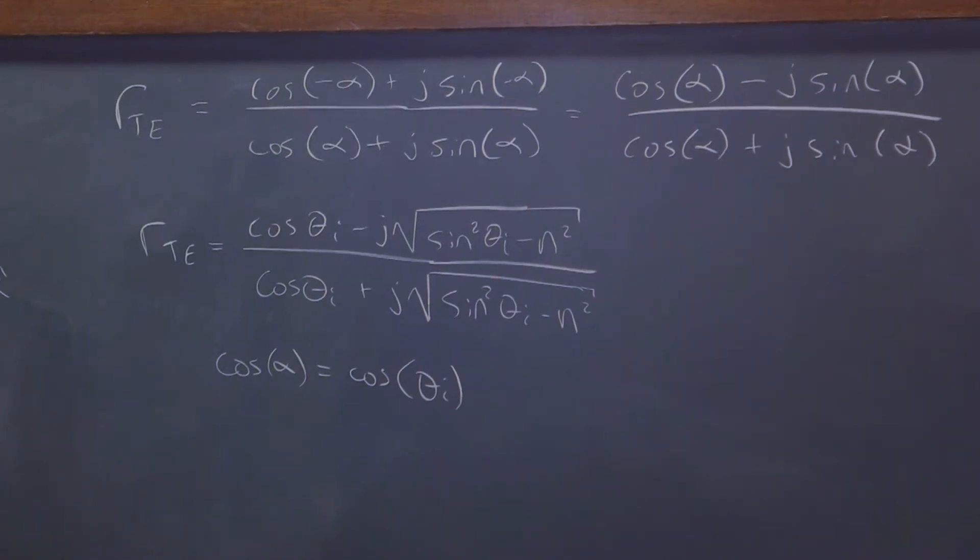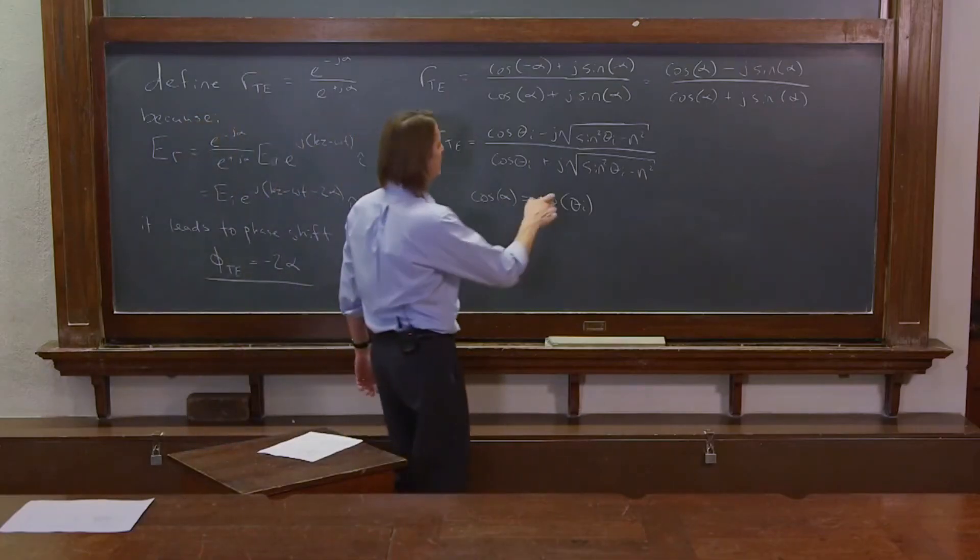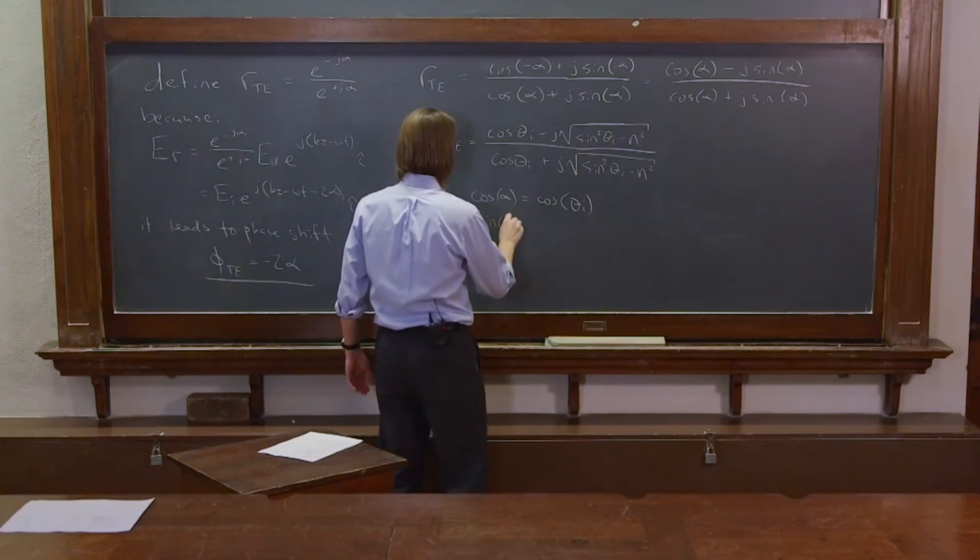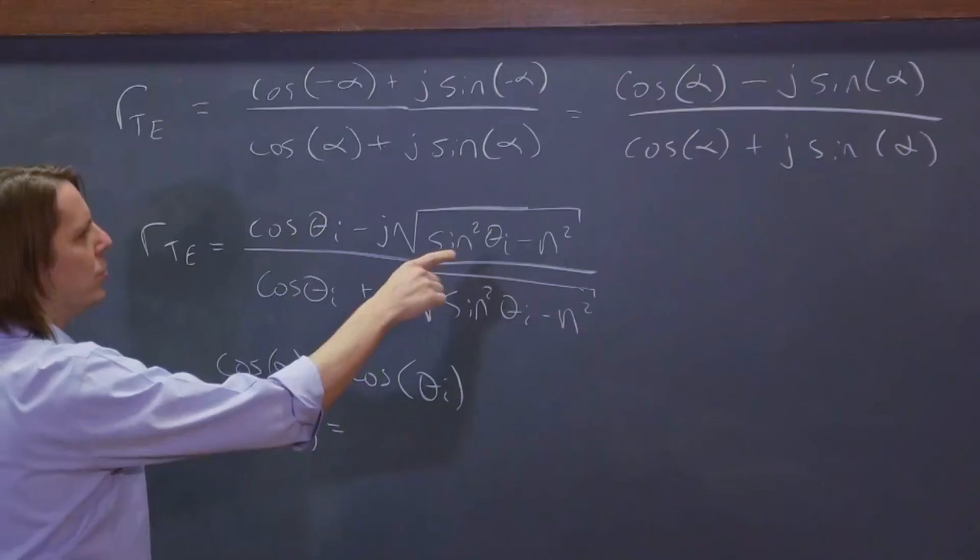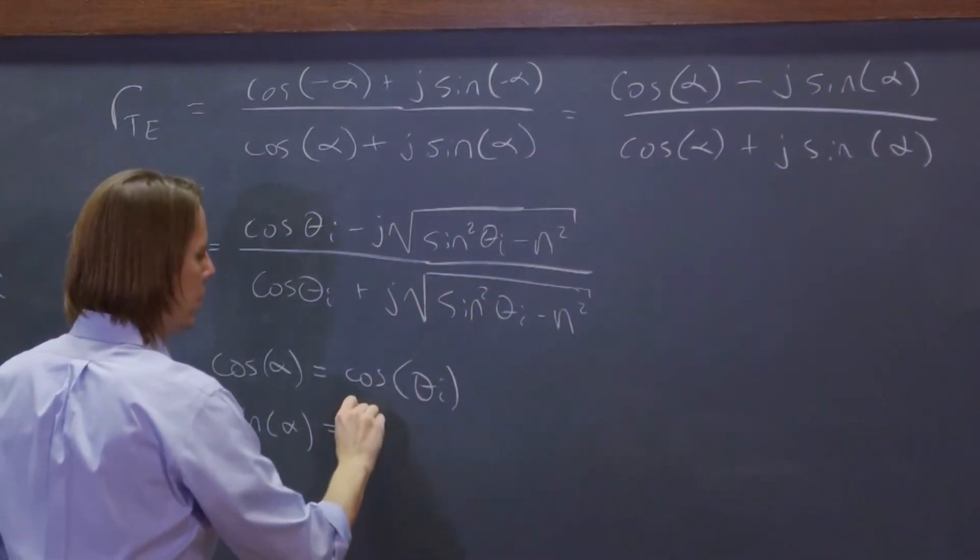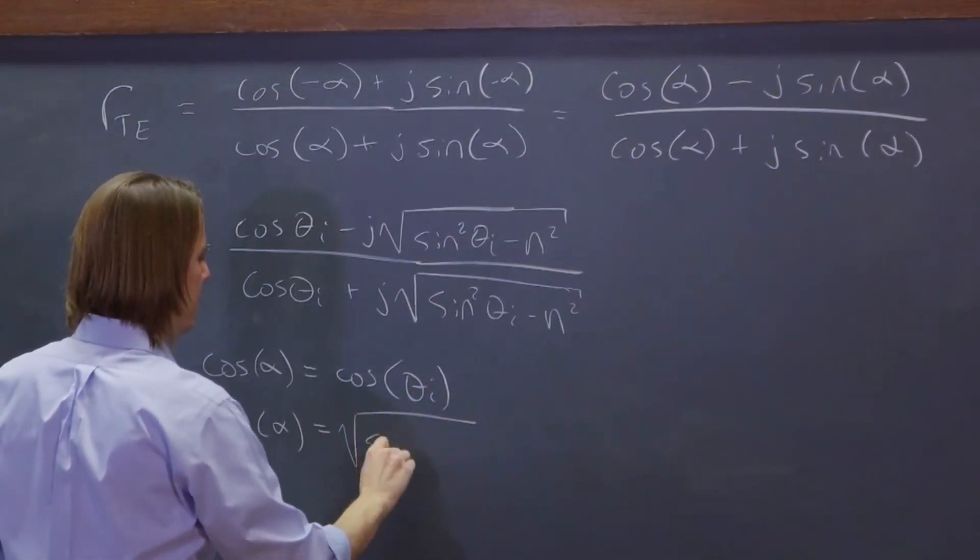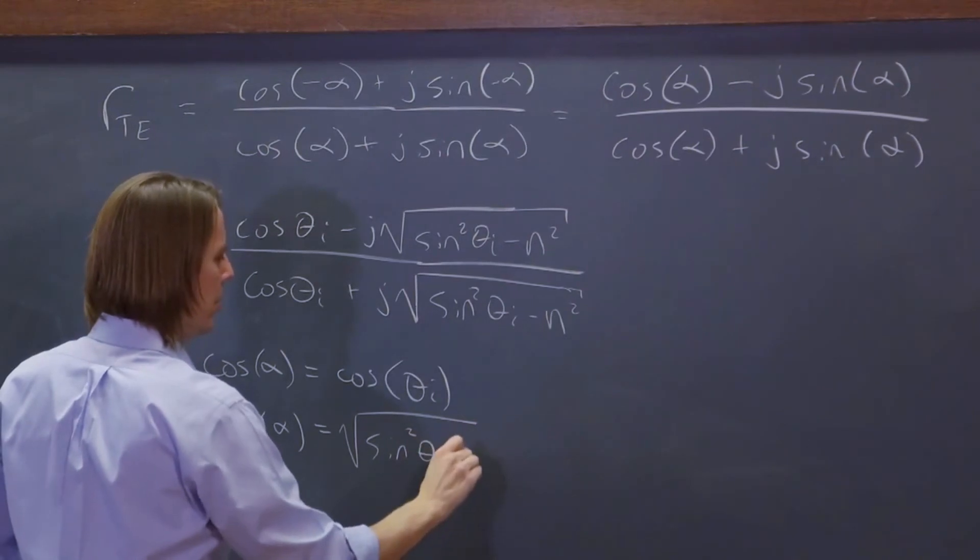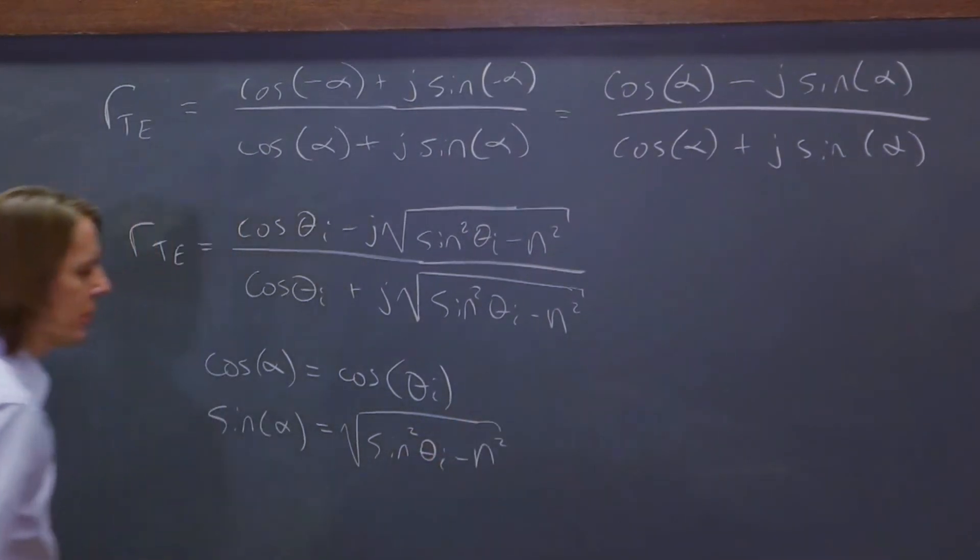And let's see, we can say that the sine of alpha equals minus j equals the square root of sine squared theta i minus n squared.